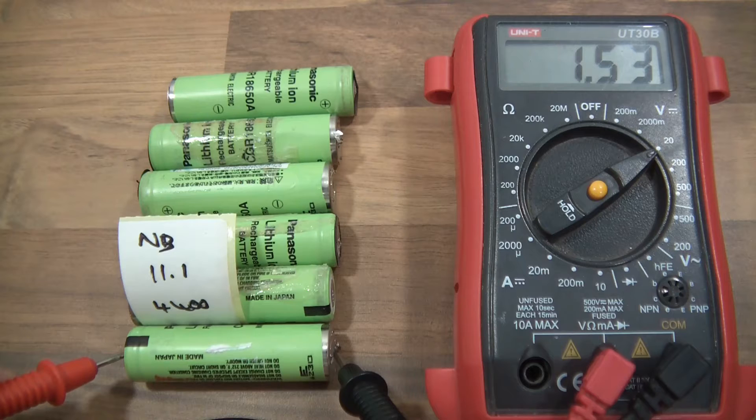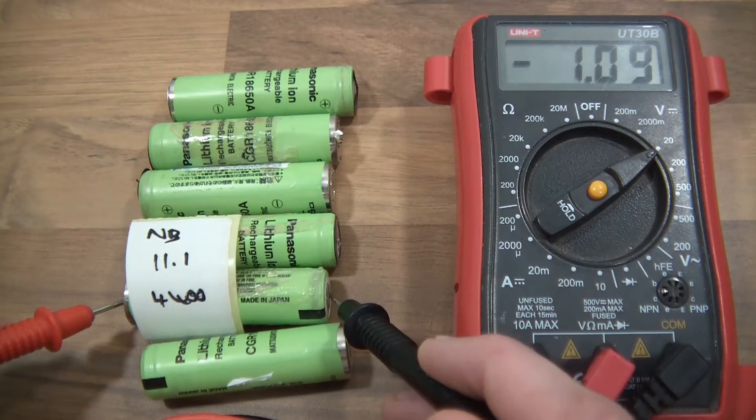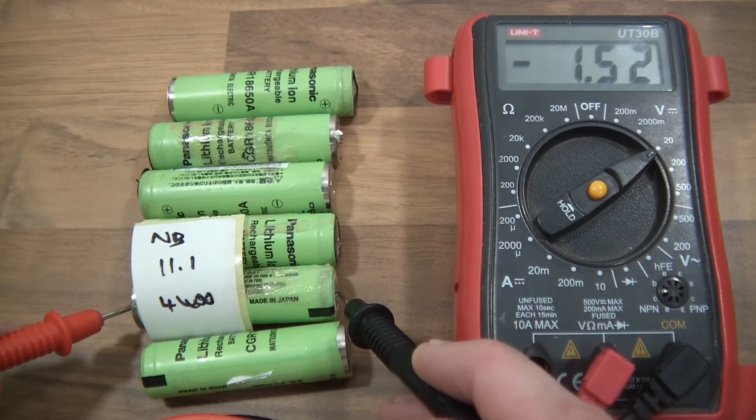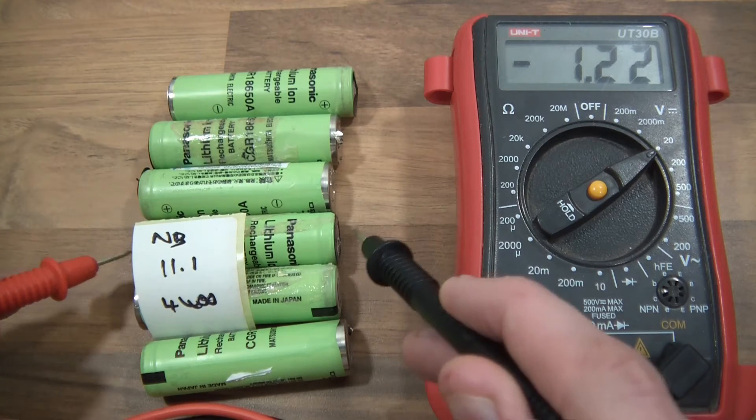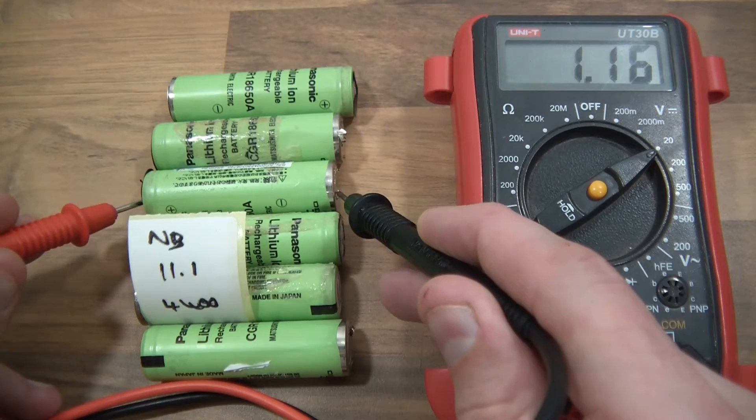So, 1.53 is probably damaged, 1 point something is probably damaged, 1 point something, yeah.